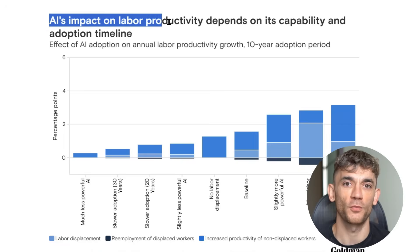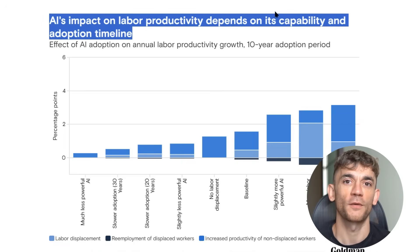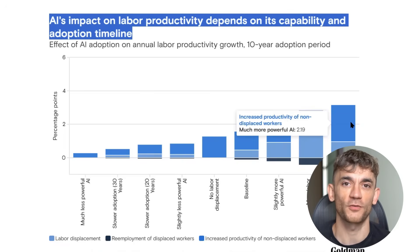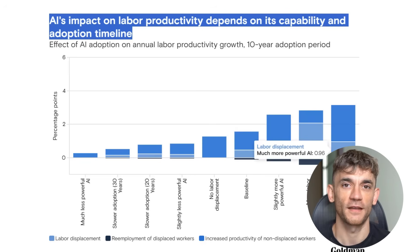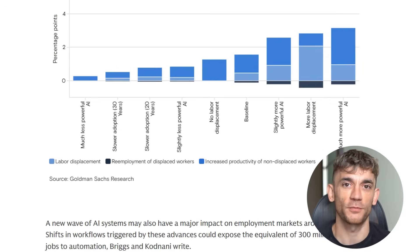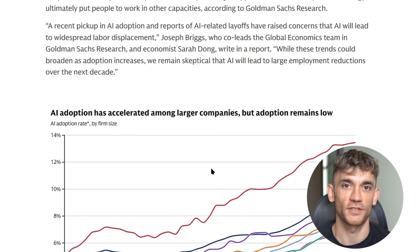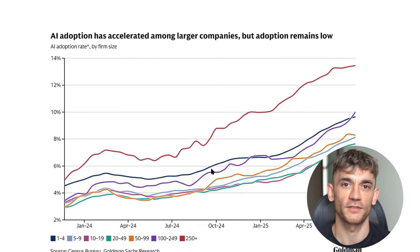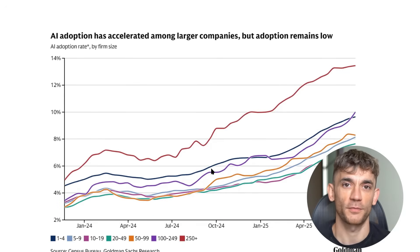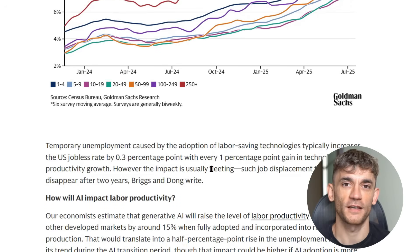Goldman Sachs just released a report saying AI will replace over 300 million jobs in the next 12 months. But here's the thing: AI won't replace people who use AI — it will replace people who don't use AI. The question is, are you going to be the person using AI to get ahead, or are you going to be the person who gets left behind?